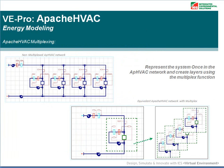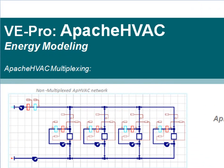One of the ways Apache HVAC has been made much more user friendly and efficient is the introduction of multiplexing. Multiplexing becomes very valuable when you have large Apache HVAC networks to model. An example would be if you have a primary air handling unit serving a number of fan coil units. In the top image of this slide, you can see a four zone network with fan coil units for each zone and a common outside air system. Without the multiplexing feature, each fan coil unit and zone has to be represented in the network.